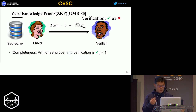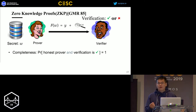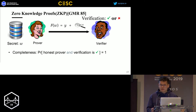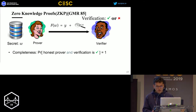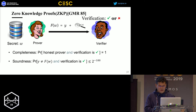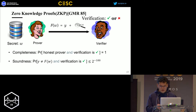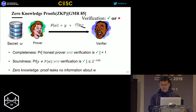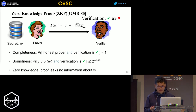There are three important properties of zero-knowledge proofs. Completeness means the verifier will accept if the computation is correct. Soundness means the verifier will accept with very low probability if the computation is wrong — something like two to the power minus 100, very very small. And zero-knowledge means after the process, the verifier could learn nothing about the secret of the prover, w.